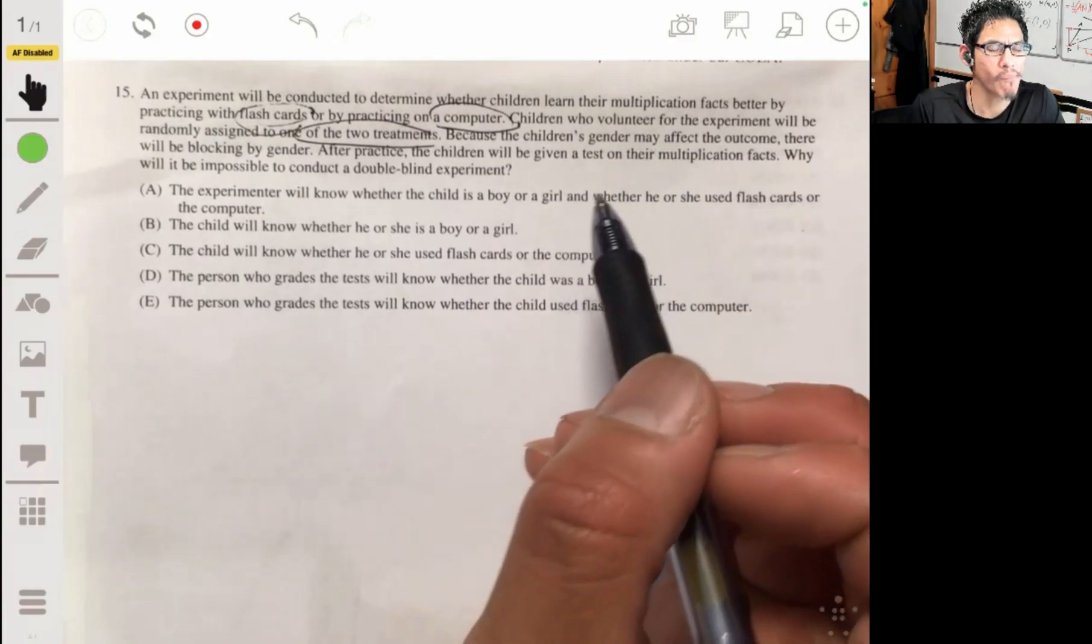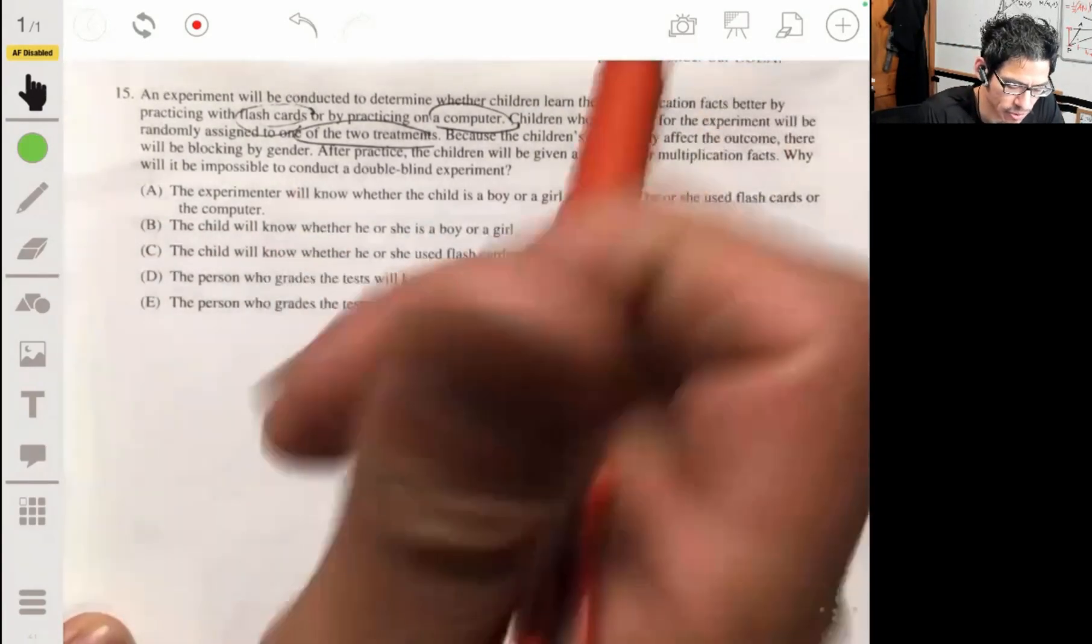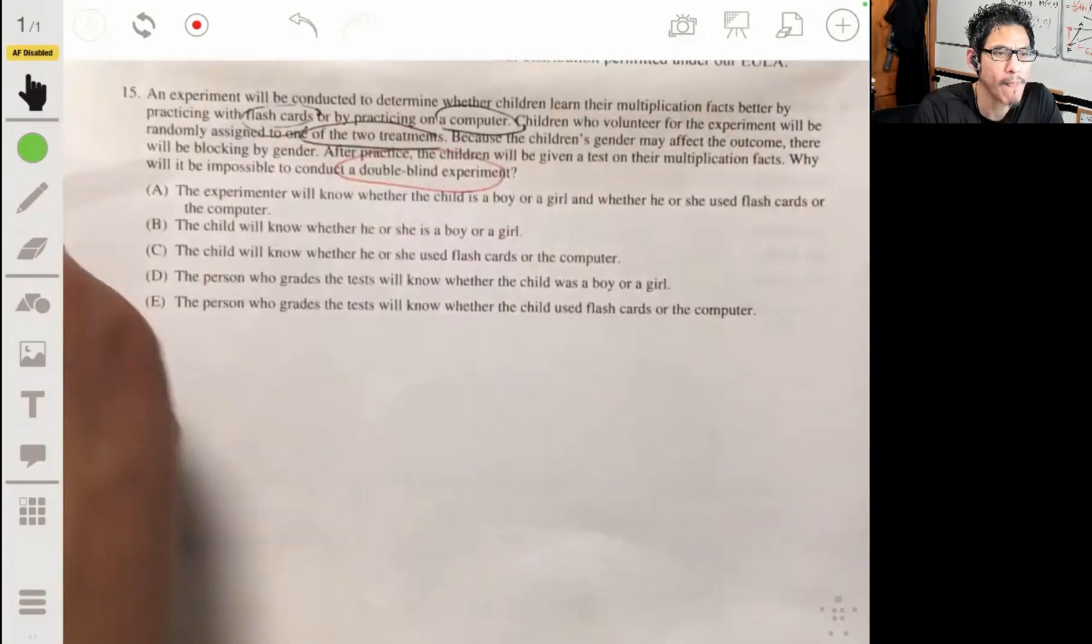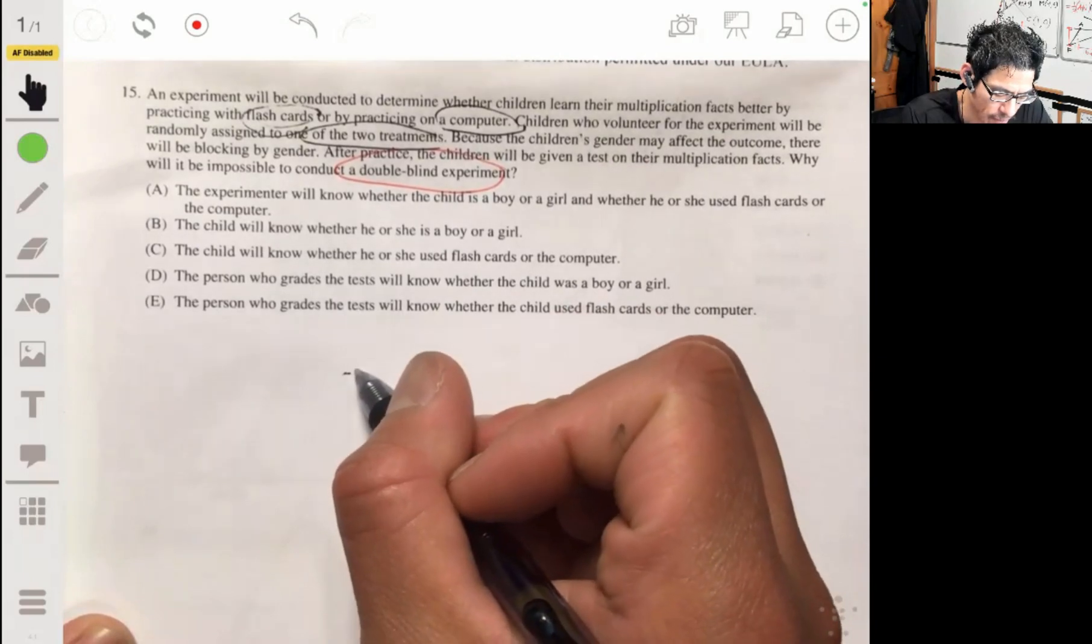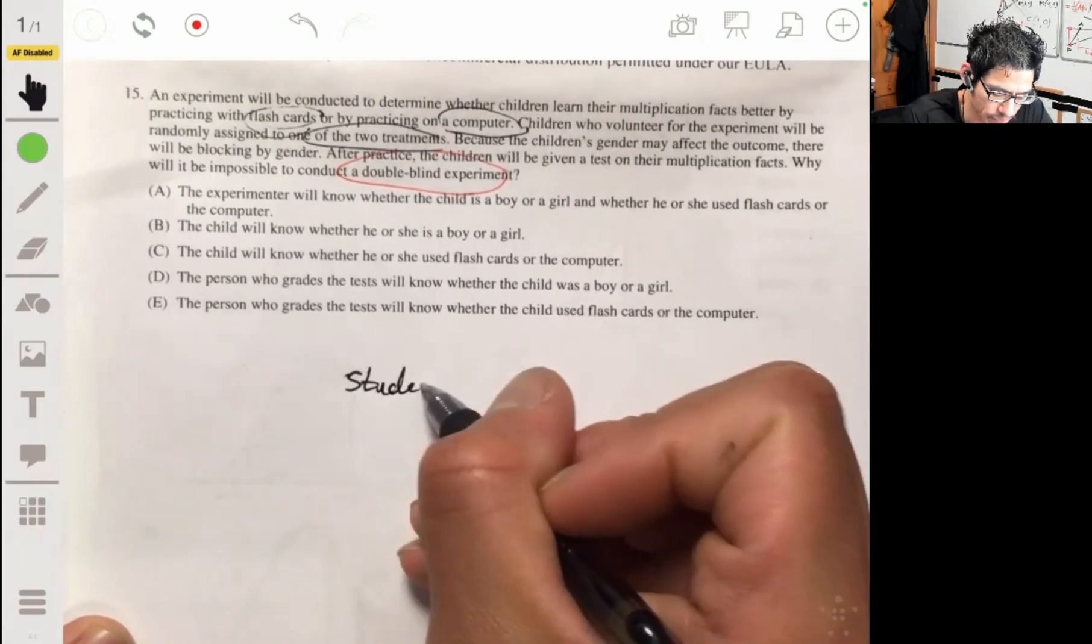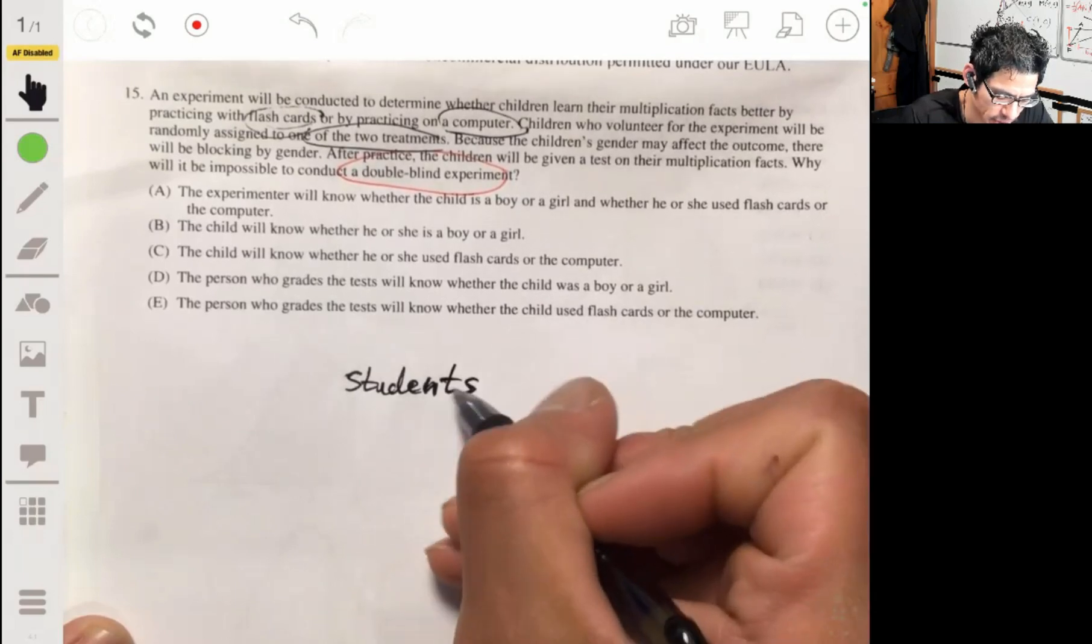And the question is now, based on the way this experiment is set up, why can we not do a double-blind experiment? Okay, so let's just make a scenario where we have a running tree diagram so you guys can really understand this if you need the extra explanation.